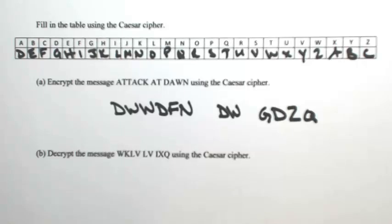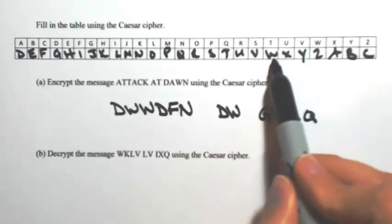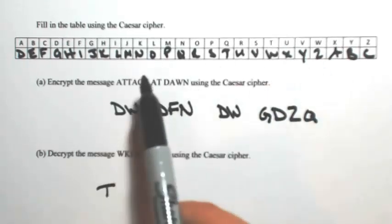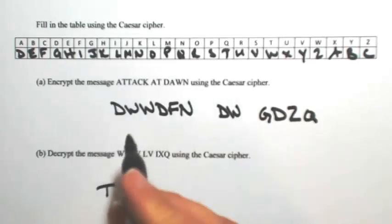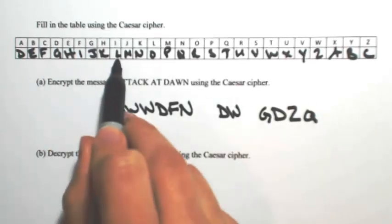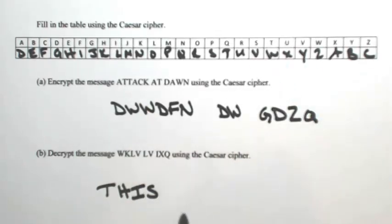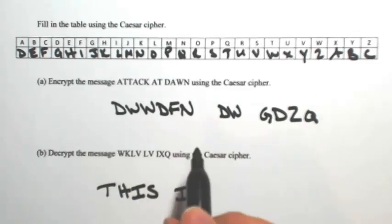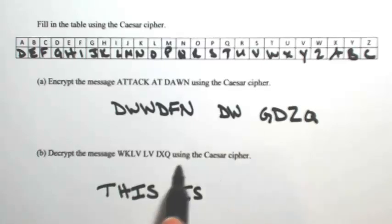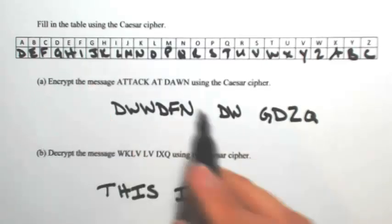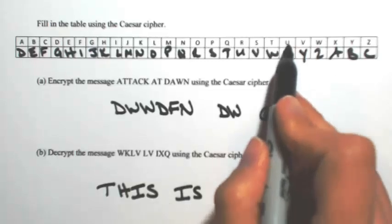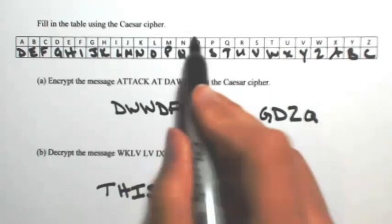Now let's say you were given an encrypted message and you want to decrypt it. You're going to look at the bottom row and go to the top row to figure out what the letter was. So a W came from a T, a K came from an H, an L was shifted from I, a V was an S, an L was an I, an X was a U, and a Q was an N.